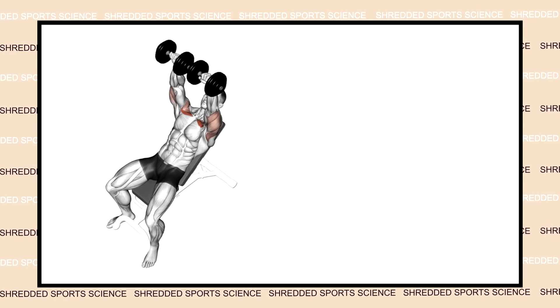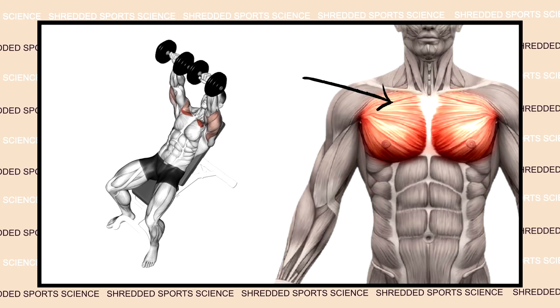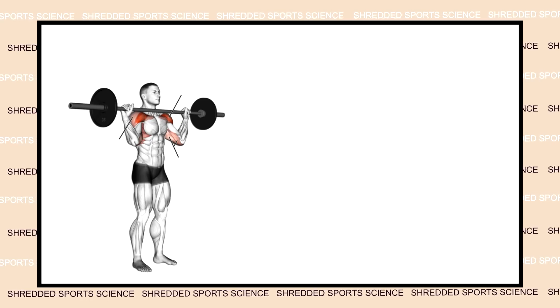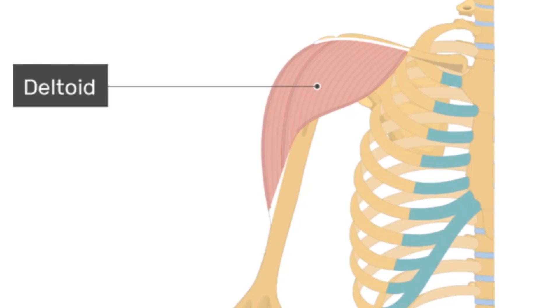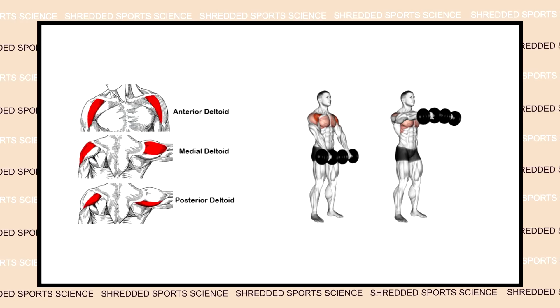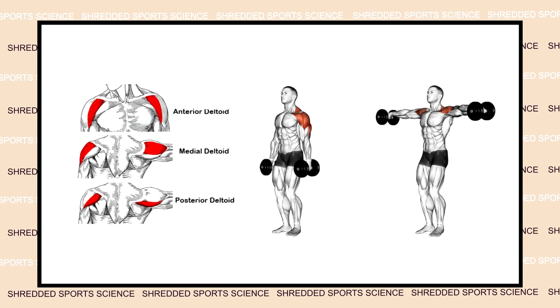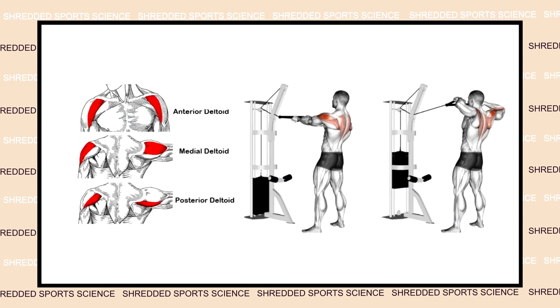The deltoid group is a great visual example of targeting specific parts of a muscle. The military press is a great compound exercise that works multiple deltoid muscles. But then you have the front raise, which puts more emphasis on the anterior deltoid; the side lateral raise, which puts more emphasis on the medial deltoid — that problem middle child — and face pulls, which put the emphasis on the rear deltoid.